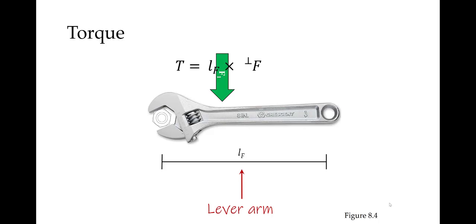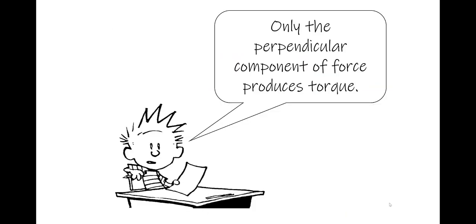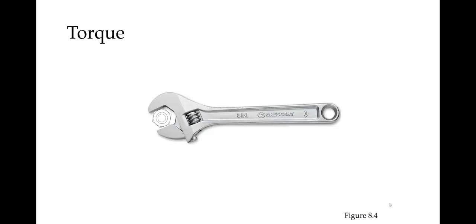Moving the point of force application closer to the axis of rotation produces less torque. You already know this—if you want to increase the torque on the wrench, you move your hand further away from the handle, and if that doesn't produce enough torque, you get a longer wrench. Note that only the perpendicular component of the force produces torque. Perpendicular is at a right angle, or 90 degrees to the lever arm. For any angle greater or lesser than 90 degrees, that same force will produce less torque.